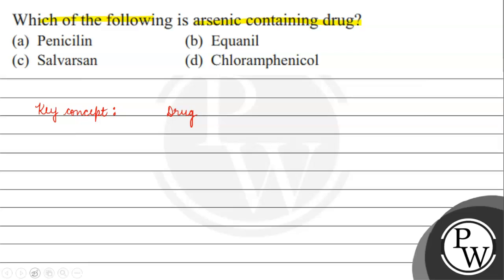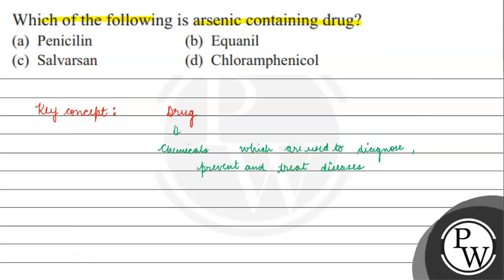What are drugs? Drugs are chemicals which are used to diagnose, prevent, and treat diseases. These chemicals are basically what we call drugs — they are used to protect us from disease, to identify disease, and to treat disease.